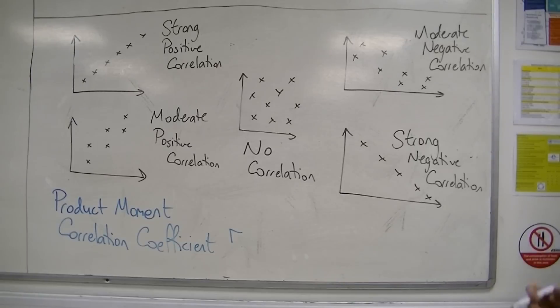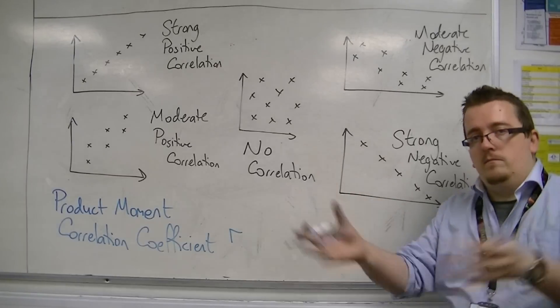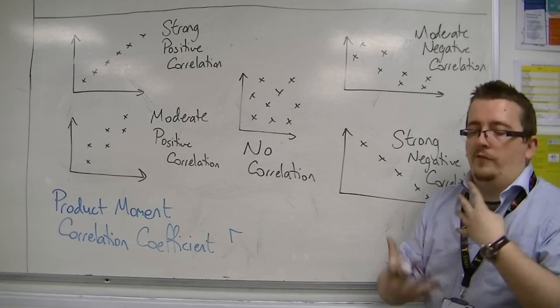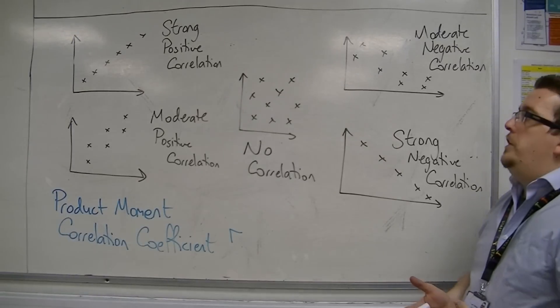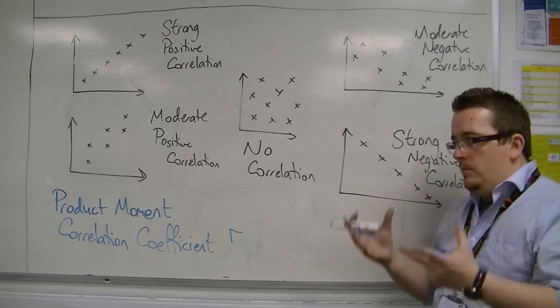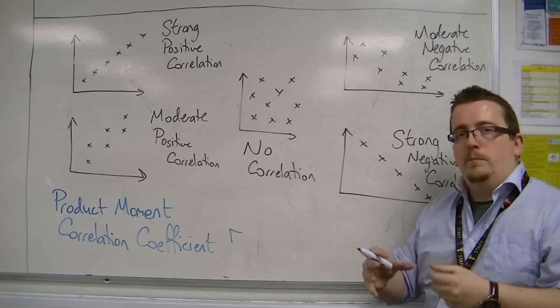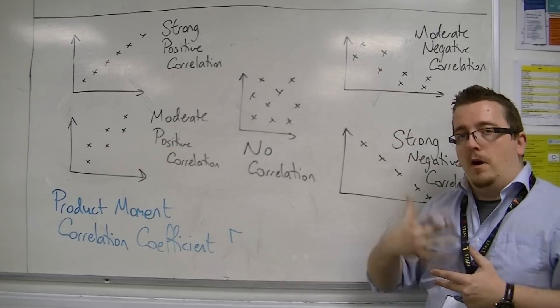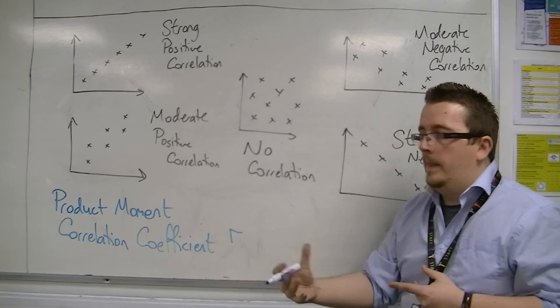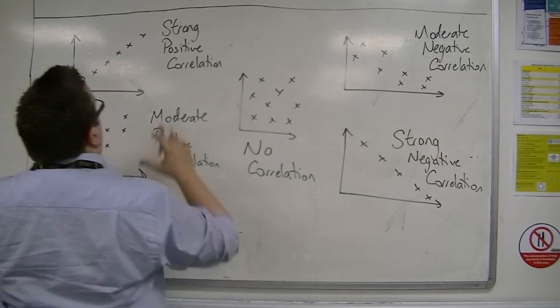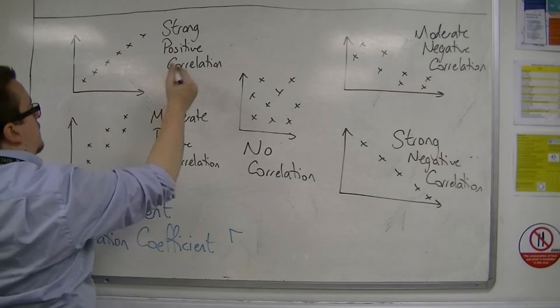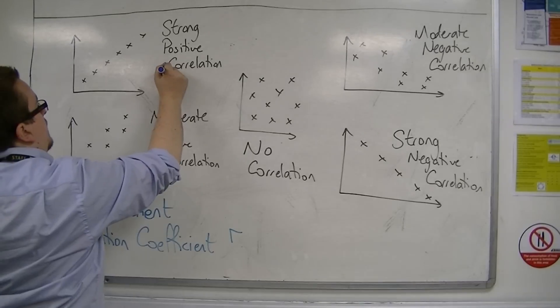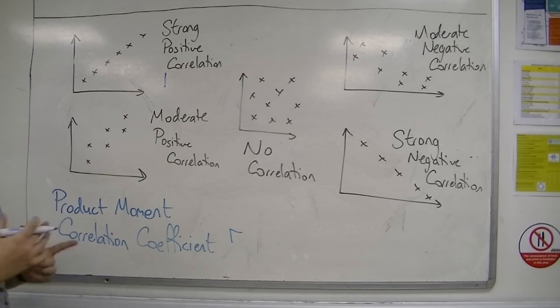It turns out, and I'll explain a rough way where this comes from in a moment, it turns out that you can identify the product-moment-correlation coefficient, R, as between the numbers minus 1 and 1. If you are at perfect strong positive correlation, then you would be at R is equal to 1.